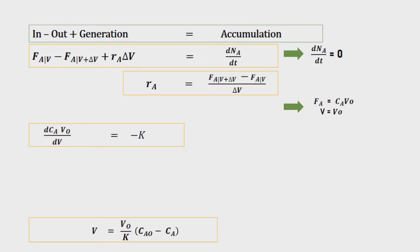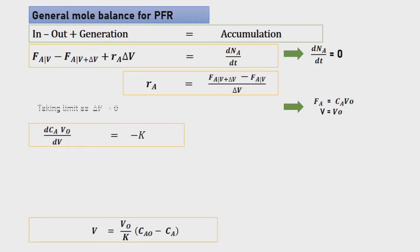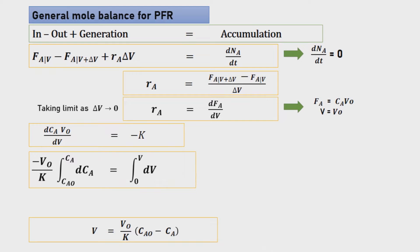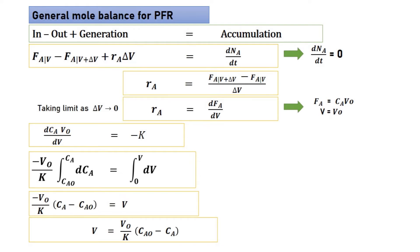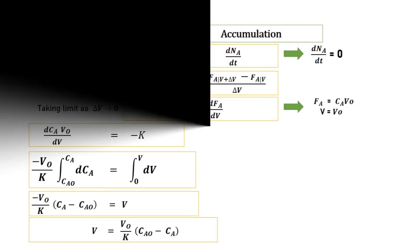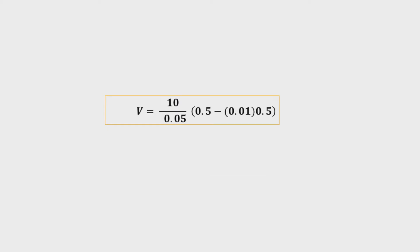For PFR, we also need to write the general mole balance for PFR and take the limit as delta V approaches zero. We get Ra equals dFA over dV equals negative K. Rearranging in terms of integration and integrating, we get V equals V0 over K times (CA0 minus CA). Substituting the values, the volume for PFR is 99 decimeter cubed.